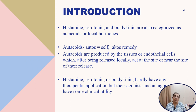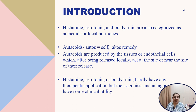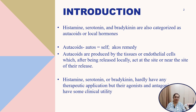Histamine, serotonin and bradykinin are categorized as autacoids. Autacoids means 'autos' meaning self and 'akos' meaning remedies, so it is self-remedy. Autacoids are released by epithelium and act at the site of release or nearby surrounding tissues. Histamine, serotonin and bradykinin hardly have any therapeutic application, but their agonists and antagonists are used for clinical utility.